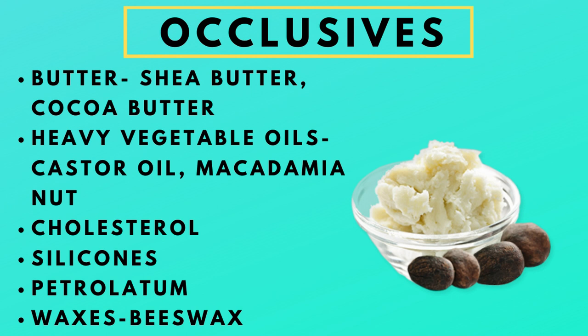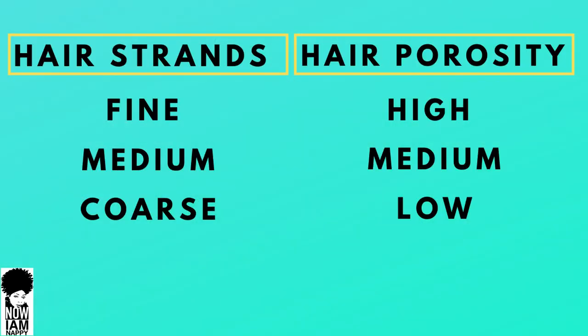Examples of occlusives include shea butter, mango butter, castor oil, beeswax, olive oil, linolen, and your waxes or silicones. Occlusives can leave a heavier or thicker barrier on your hair strand. When looking for a moisturizer that's going to work for you, consider the type of hair strands you have and your hair porosity. Check out my porosity series to help you learn your porosity and which products work best.